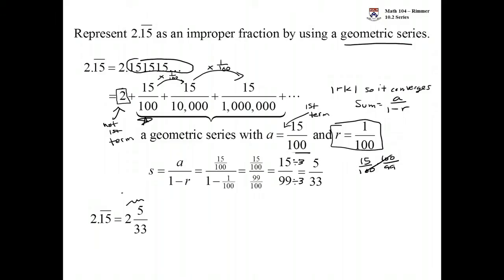This is a mixed number and we want it as an improper fraction. Well you can go from a mixed number to an improper by multiplying the denominator by the whole number and then adding the numerator.